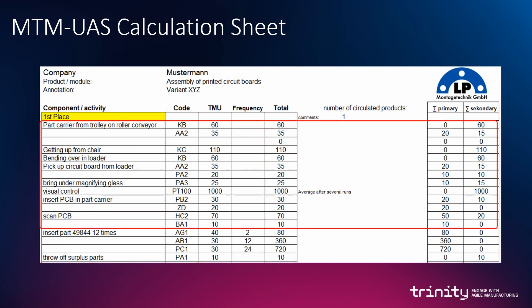In our exemplary use case MTM UAS calculation, we started with the first steps: fetching a part carrier from a trolley, bringing it to the roller conveyor, picking up a circuit board including a visual control by using a magnifying glass, placing it on the part carrier, and scanning the PCB.